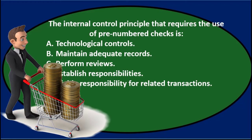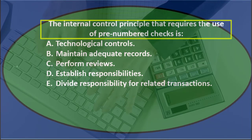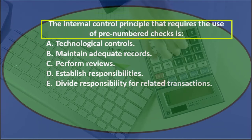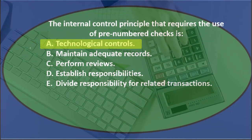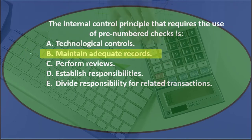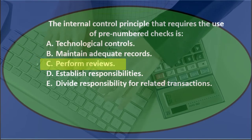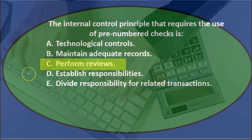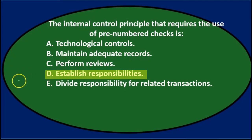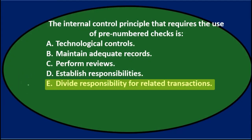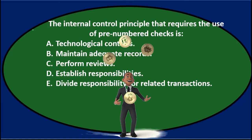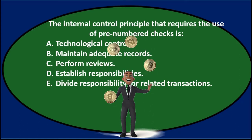Next question: the internal control principle that requires the use of pre-numbered checks is — A. Technological controls. B. Maintain adequate records. C. Perform reviews. D. Establish responsibilities. Or E. Divide responsibility for related transactions. We will read through and eliminate options.